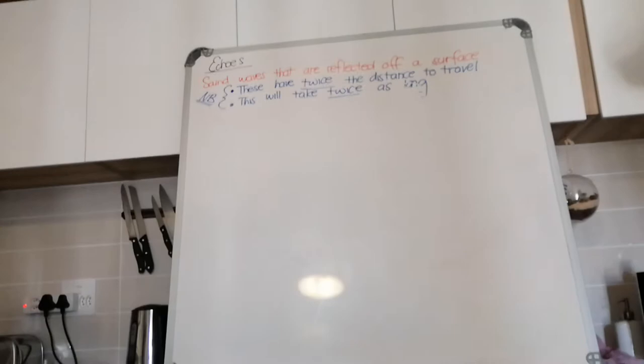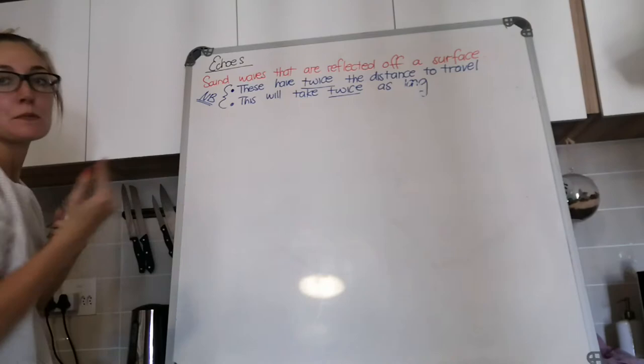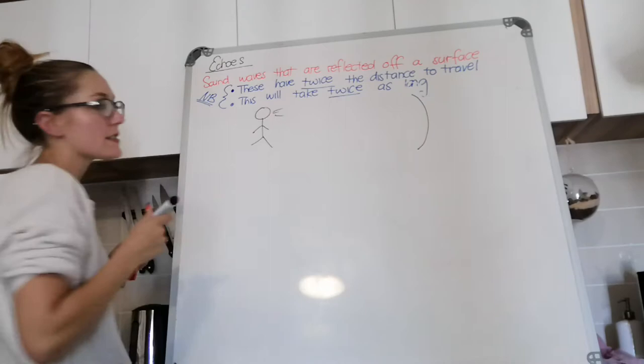Sorry, there's a cat attempting to ruin everything. These echoes have traveled twice the distance and obviously have taken twice as long to get there and back again. Very important to remember that. For an example, if we had a man standing and he shouts and there's a cave wall, he's inside a cave.